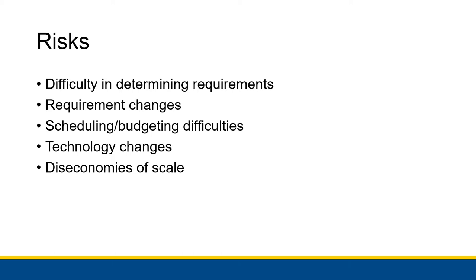Any sort of change in what the system is supposed to do can be really detrimental to development, because we design and build systems based on what they're supposed to do. If the fundamental information about what they're supposed to do changes, it doesn't work very well. That's the second type of risk — we'll go into that in a little more detail. Then there are scheduling and budgeting difficulties, technology changes, and diseconomies of scale, which is a very fun one I'll introduce once we get there.